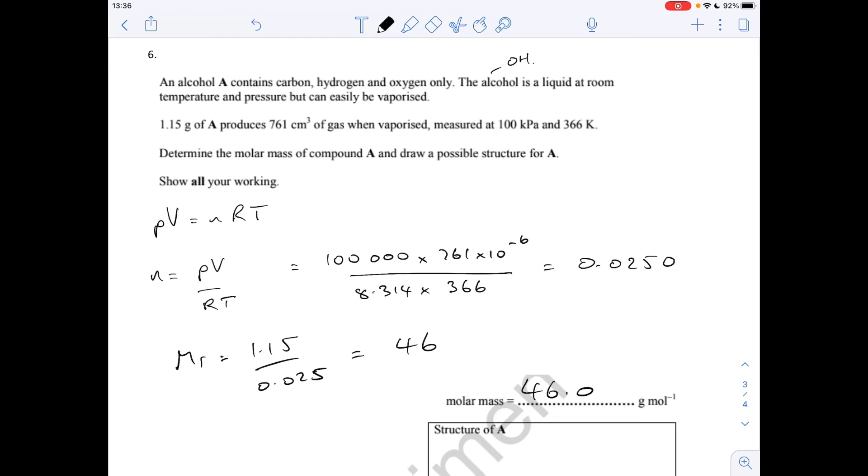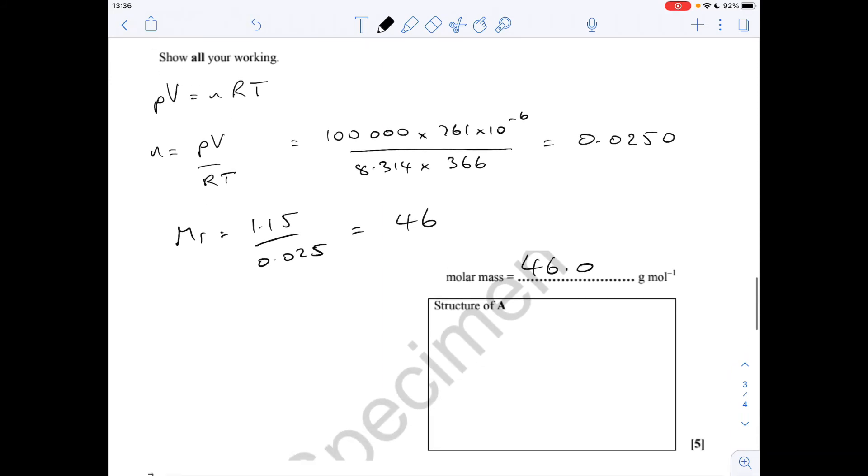OK, so 46. We'll put it at three significant figures, so it ties in with everything else. So possible structure for A, well, it's going to be ethanol, C2H5OH.